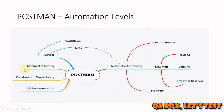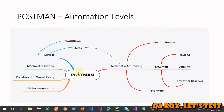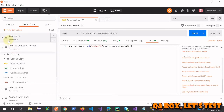Looking at the broader picture, we can do manual API testing, write scripts, do documentation and collaboration. Now what we are doing with Collection Runner is executing and automating the whole collection. You can also monitor your collection, meaning you can schedule when you want to run it.